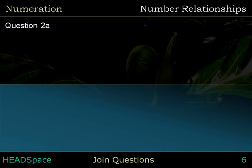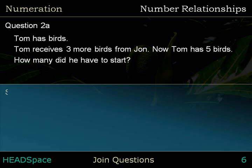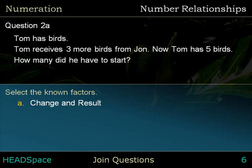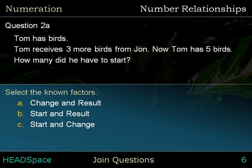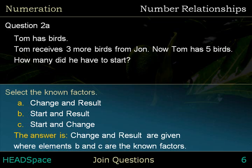Question 2a. Tom has some birds. Tom receives three more birds from John. Now, Tom has five birds. How many did he have to start? Select the known factors. The options are: change and result, start and result, or start and change. The answer is change and result, where elements B and C are the known factors.